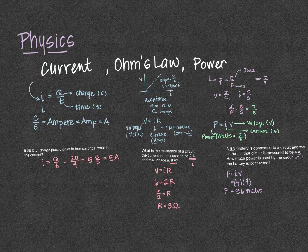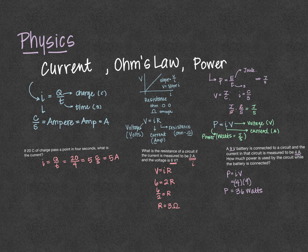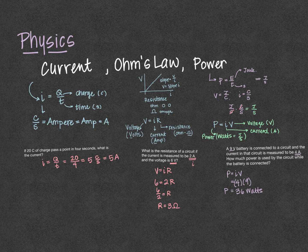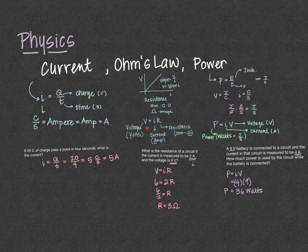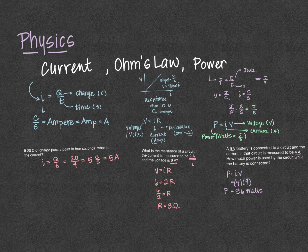So we've looked at how current and resistance and power can be calculated using the relationship of current being charge per time, voltage being current times resistance, and power being current times voltage.